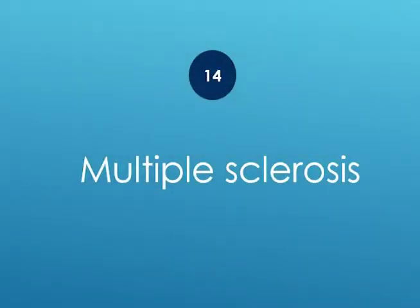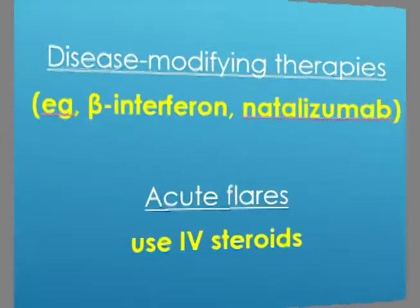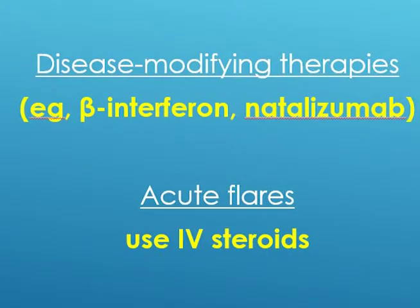Multiple sclerosis: for acute flares, use IV steroids. For disease-modifying therapies, use beta interferon and natalizumab.